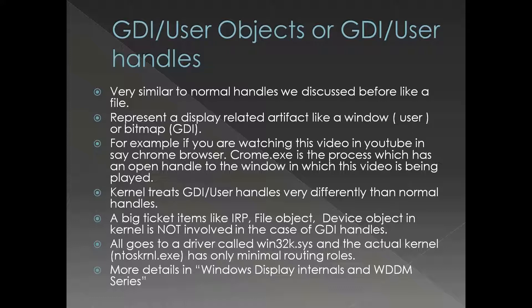There are a couple more things which make them a little bit more interesting which we're going to see shortly. These handles represent a display-related artifact. For example, if you're watching this video in a Windows operating system, you must be mostly looking at a user object, which is nothing but a window handle. The kernel treats GDI and user object handles very differently than normal handles, which is why we have this separate presentation for this particular type of handles.